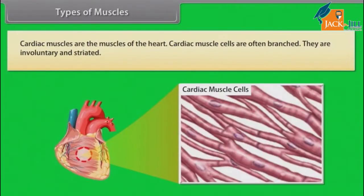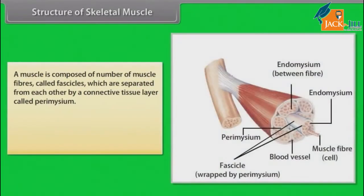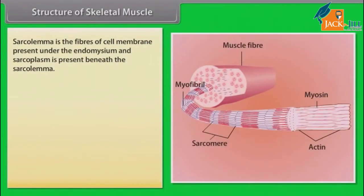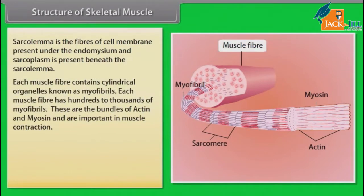Cardiac muscles are the muscles of the heart. Cardiac muscle cells are often branched; they are involuntary and striated. Each muscle fiber contains cylindrical organelles known as myofibrils, and they are not under voluntary control of the nervous system. Each muscle fiber has hundreds to thousands of myofibrils.